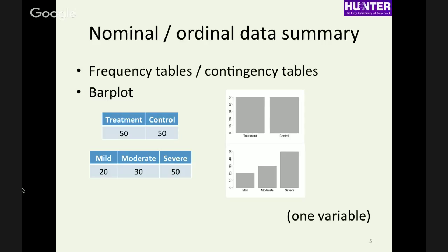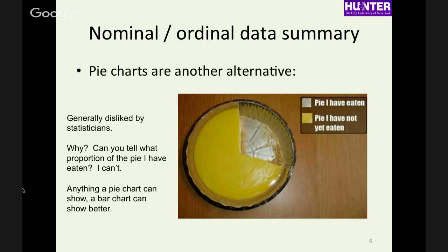The graphical analog of the frequency table is the bar plot — they're interchangeable, one visual, one numeric. There are arguments among statisticians about whether a table or a plot is better, but it depends. Pie charts are the other alternative, but they're not a favored method because they're not very quantitative — they're good for infographics, but it's hard to read them precisely.